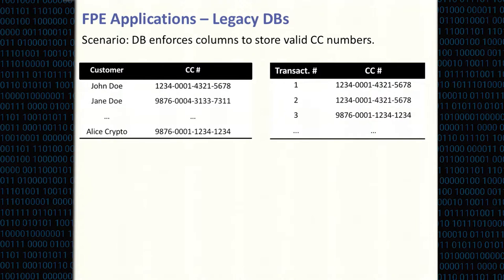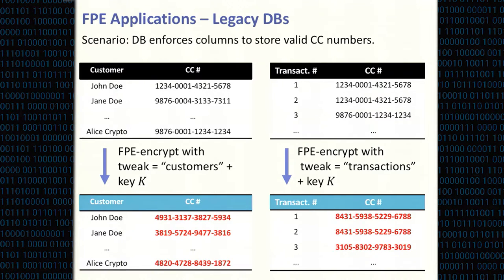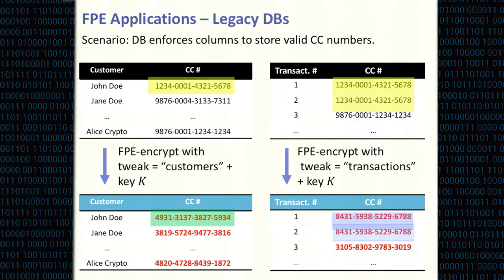A typical application scenario for format preserving encryption is adding encryption in legacy databases where field formats are enforced and cannot be changed. A company might have tables containing credit card information associated to customers and transactions, and they'd like to encrypt this without changing the constraint that entries are valid credit card numbers. Different tables can be encrypted under different tweaks so that the same credit card number encrypted under the same key but different tweaks produces different ciphertexts, making the attacker's job harder.